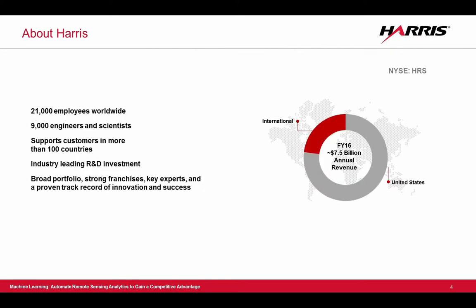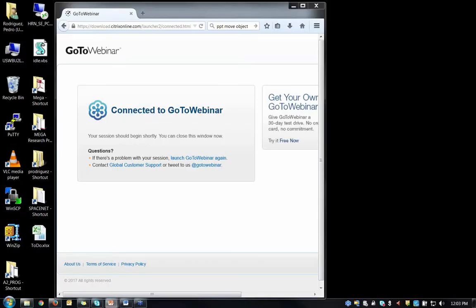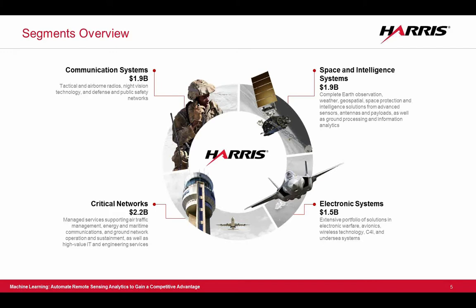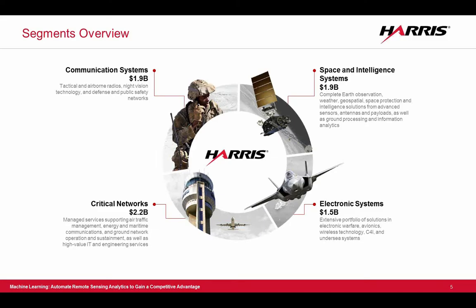This is Will Rohrer. Harris Corporation is a worldwide organization with customers in more than 100 countries. We have about 21,000 employees, 9,000 of which are engineering scientists, so there is a very heavy research and development focus in the company. Under Harris Corporation, we are divided into four segments: communication systems, space and intelligence, critical networks, and electronic systems. We are speaking to you from the space and intelligence systems segment, which is focused on intelligence, surveillance, and reconnaissance type of applications for DoD, Intel, and commercial entities.